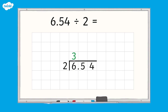When we divide the five tenths into two equal groups, there are two tenths in each group with one tenth left over, so we record a 2 above the five tenths. As there's one left over, we need to make an exchange: one tenth is the same as ten hundredths. We write a small 1 before the four to represent 14 hundredths. We then divide the 14 hundredths into two equal groups — there are seven hundredths in each group — and record a 7 above. So 6.54 divided by 2 equals 3.27.